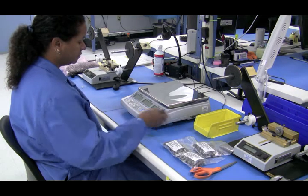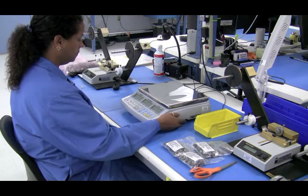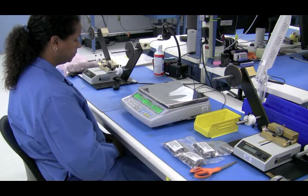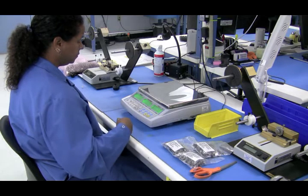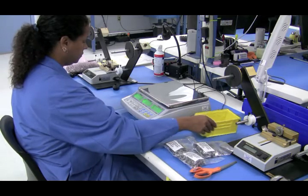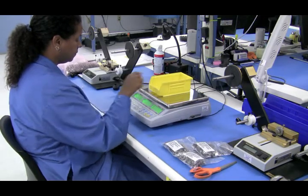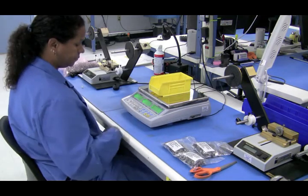To do so we turn the scale on and then we take a container and put it on the top of the scale and then we tare or zero the scale.